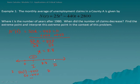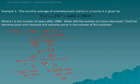For region 2, let's plug in 9: 50 times 9 minus 440 gives us 450 minus 440, which equals 10 — a positive value. So in region 2 we have a positive derivative. We can now answer the question: between 0 and 8.8 years the function decreased. The number of claims decreased between 1980 and 1989, and from 1989 onward it increased.